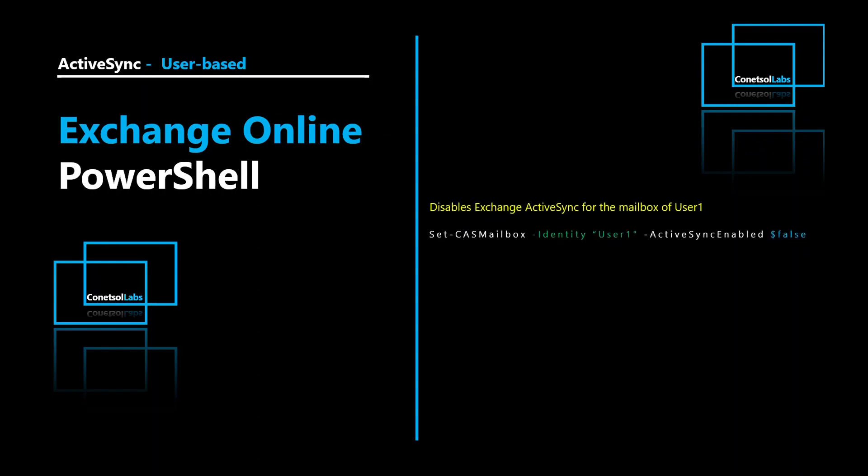This command will disable Exchange Active Sync for the mailbox of User1. User1 is our specific user, so this command only disables Active Sync protocol for this user only. We can disable Active Sync for a specific user using a PowerShell command or the GUI using Exchange Admin Center. If we want to enable Active Sync for this user, if the ActiveSyncEnabled parameter value is true, then Active Sync will be enabled for that particular user.